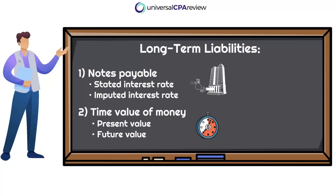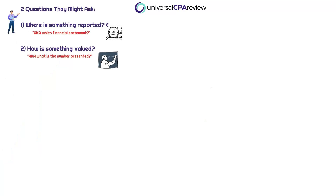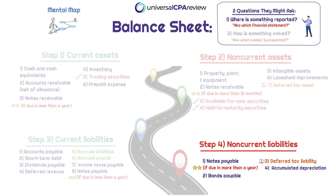Now we're going to introduce long-term liabilities, and then we're going to talk about the concept of the time value of money. The FAR exam has two primary questions we need to address: how is something getting classified — where in the financial statements is this getting reported — and what is the value, the number that is getting presented in that financial statement. Previously we talked about the classification portion in our balance sheet lecture, and we discussed what is getting reported as a long-term liability.